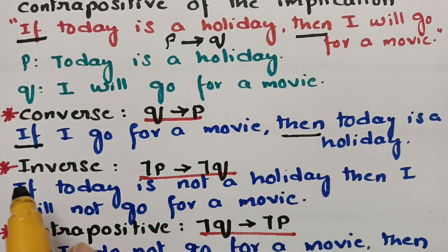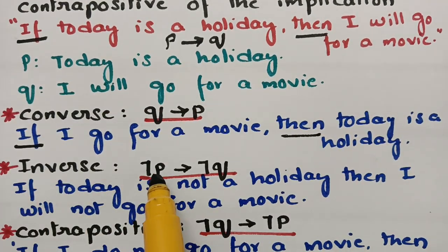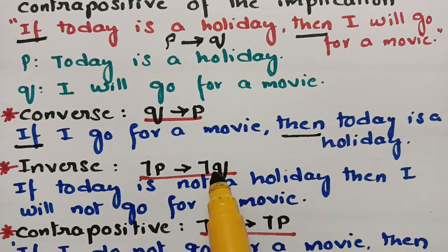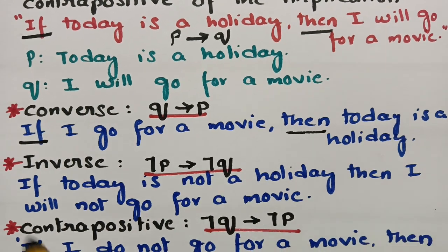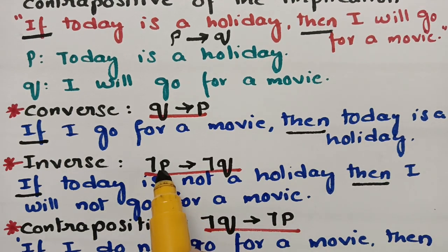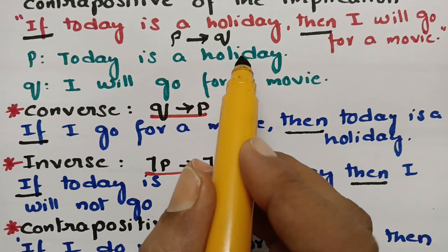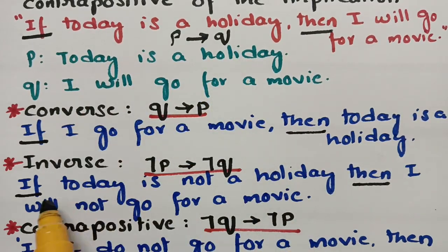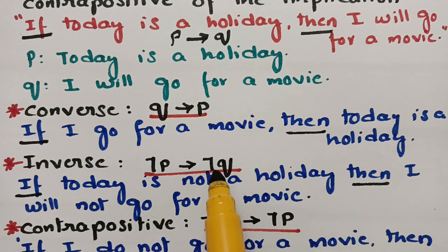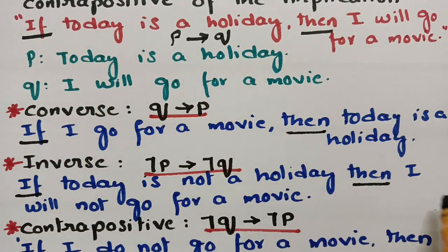Next is the inverse. The inverse is negation P implies negation Q — meaning the negative statement of P followed by the negative statement of Q. We start with if and then. The negative statement of P: 'today is a holiday' becomes 'today is not a holiday.' The negative statement of Q: 'I will go for a movie' becomes 'I will not go for a movie.' So the inverse is: 'If today is not a holiday, then I will not go for a movie.'